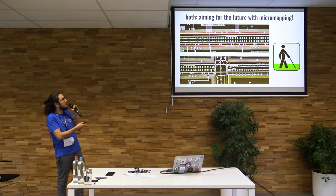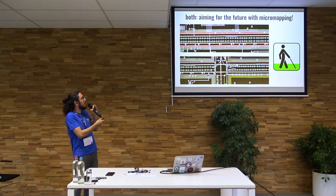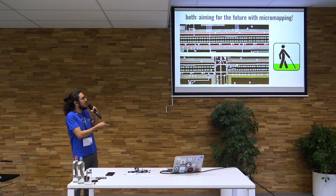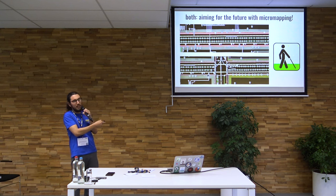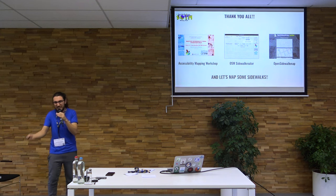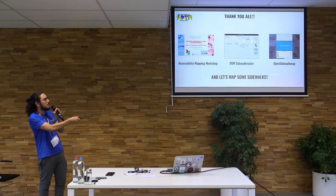And the other thing is to aim for the future with micromapping. You can imagine if you have all trees mapped, all poles and stuff — you can have, for example, navigation to assist blind people, effectively using the positions of objects to provide really very assistive navigation. This was my presentation, thank you all. Let's map some sidewalks!